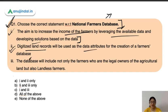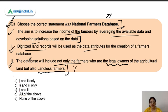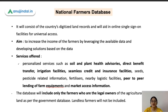The second statement is: digitalized land records will be used as the data attributes for the creation of a farmer's database. This is also correct. The third statement says the database will include not only legal owners of agricultural land but also landless farmers — this one is wrong, because presently this database will consist only of land records of farmers who are the legal owners. So the correct answer is A — first and second only.